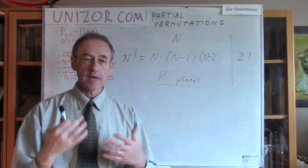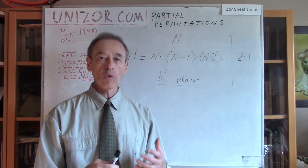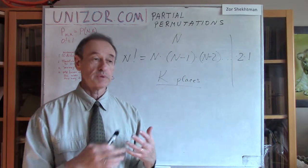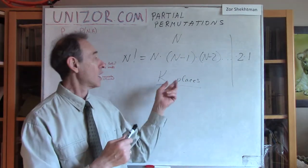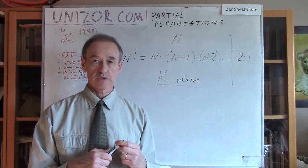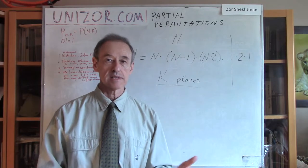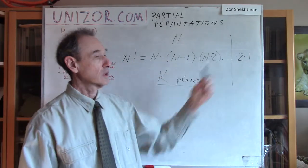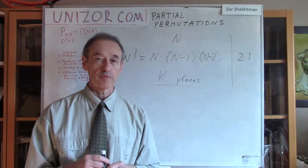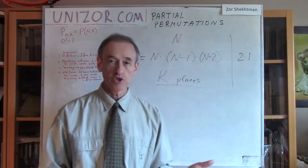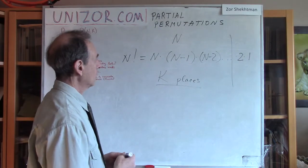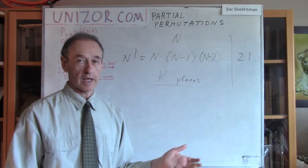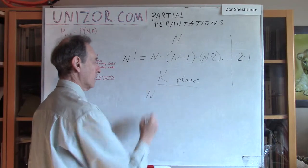Our task is not only to position certain objects in a certain order, but we have to actually pick only k objects out of n and put them into these positions. We will use exactly the same logic as we used when we wanted to place all objects into an ordered set. Let's examine how many choices we have. For object number one out of these k, we have to pick out of the whole set of n objects, which means we have n different choices.